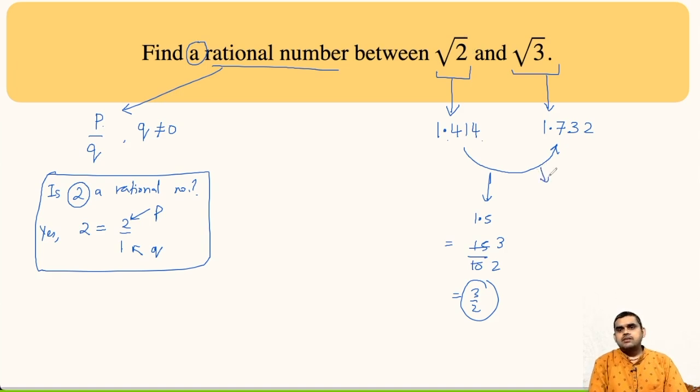Another possible answer could be 1.6 because it is again in between 1.414, which is root 2, and 1.732, which is root 3. And we can write 1.6 as 16 by 10, then we can cancel by 2. So, it will be 8 upon 5.